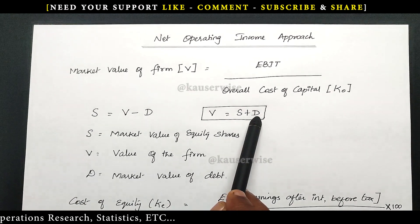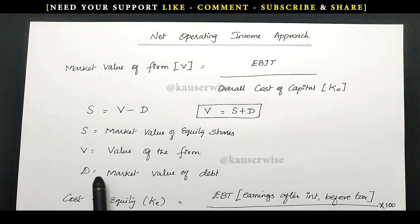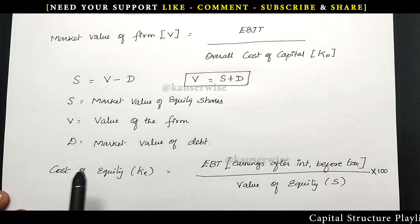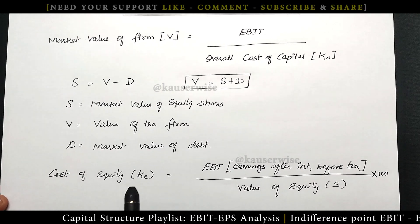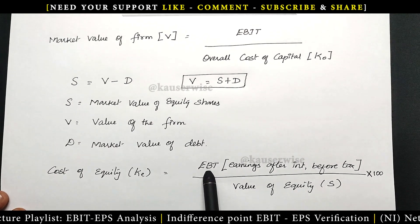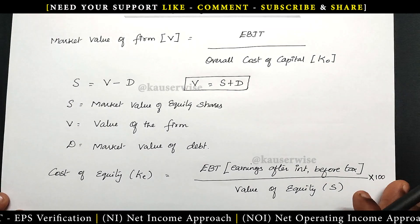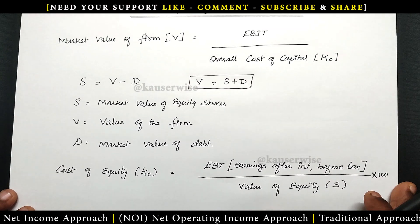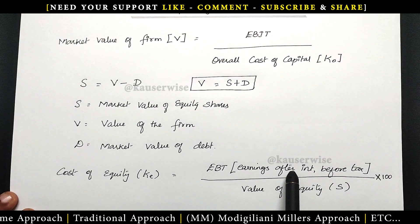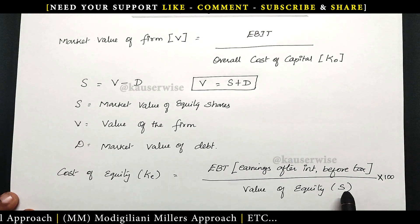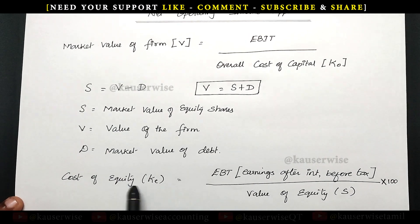From V = S + D, we get S is equal to V minus D, where S refers to market value of equity, V refers to market value of the firm, and D refers to market value of debt. The second important component is cost of equity, that is KE, also called the equity capitalization rate. The formula is KE = EBT divided by S, into 100. EBT refers to earnings after interest but before tax — because one of the assumptions under the net operating income approach is there is no corporate tax. Divide by S, the market value of equity, and multiply by 100 to get the cost of equity.